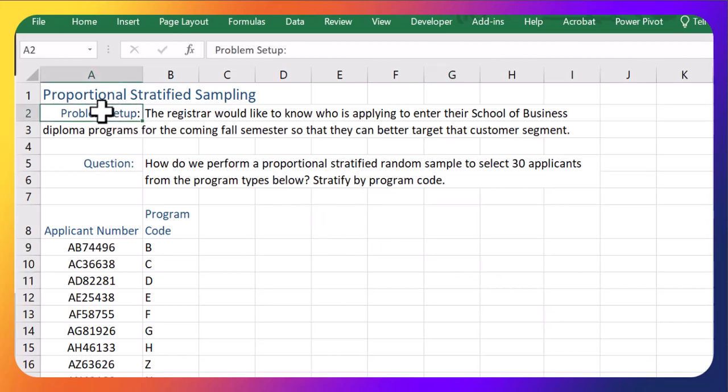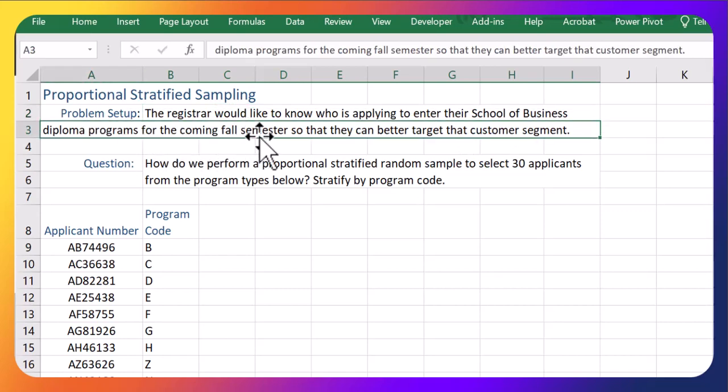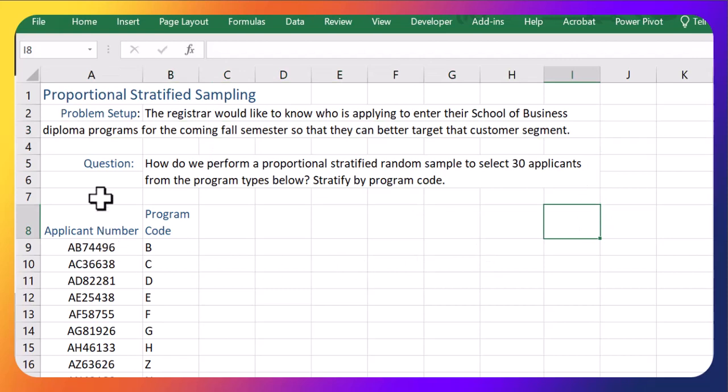Let's look at an example here. The problem setup: the registrar would like to know who is applying to enter their School of Business diploma programs for the coming fall semester so that they can better target their customer segments. Question: how do we perform a proportional stratified random sample to collect 30 applicants from the program types below? Let's stratify by program code.